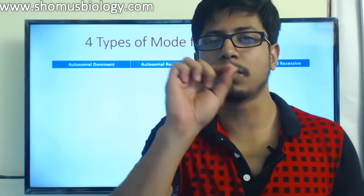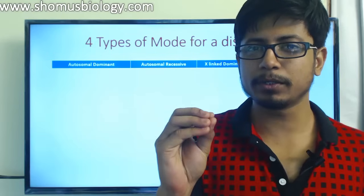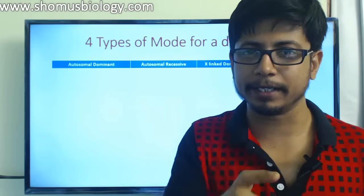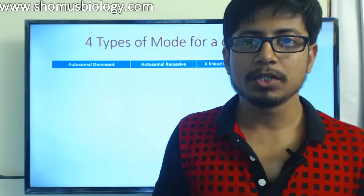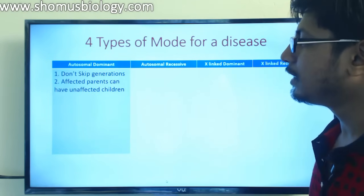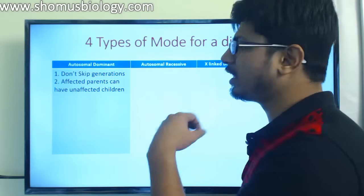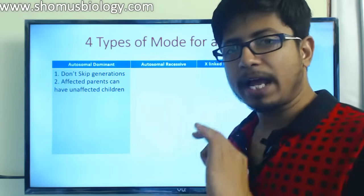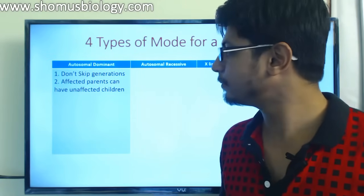We are not going to solve the pedigree from start to end - we are just going to look for some clues. Whenever we find the clue, we can tag a pedigree with one of these four types. Let us look at some important properties of autosomal dominant. First, autosomal dominant is a dominant trait - it generally does not skip any generation, meaning in every single generation at least one individual is affected.